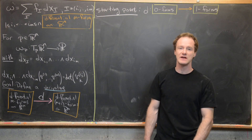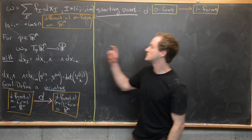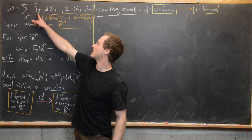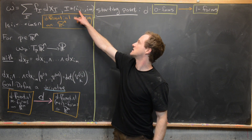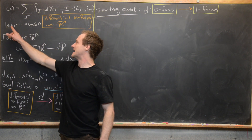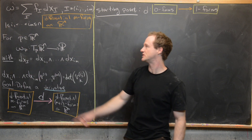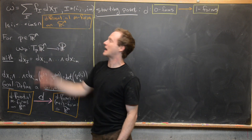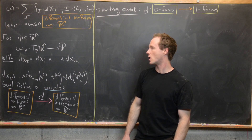We begin looking at the notion of the derivative of a differential M-form on Rn. Recall that omega is a sum over multi-indices capital I of F_I dX_I, where I is a multi-index — an M-tuple with 1 ≤ i₁ < i₂ < ... < i_M ≤ n. The F_I's are differentiable functions. This is known as a differential M-form on Rn.